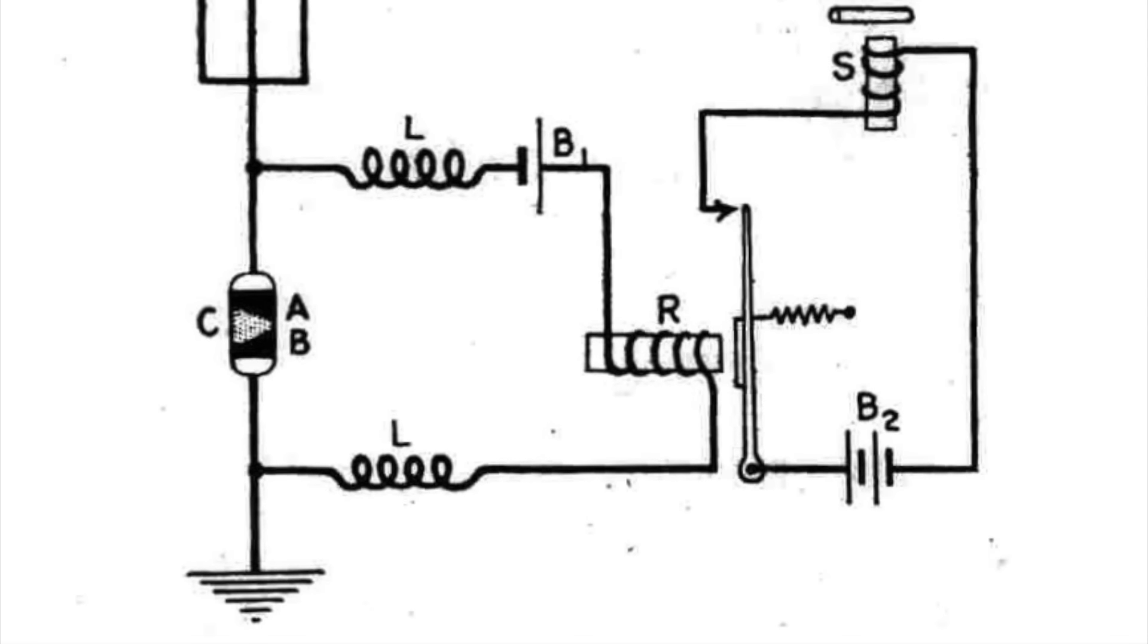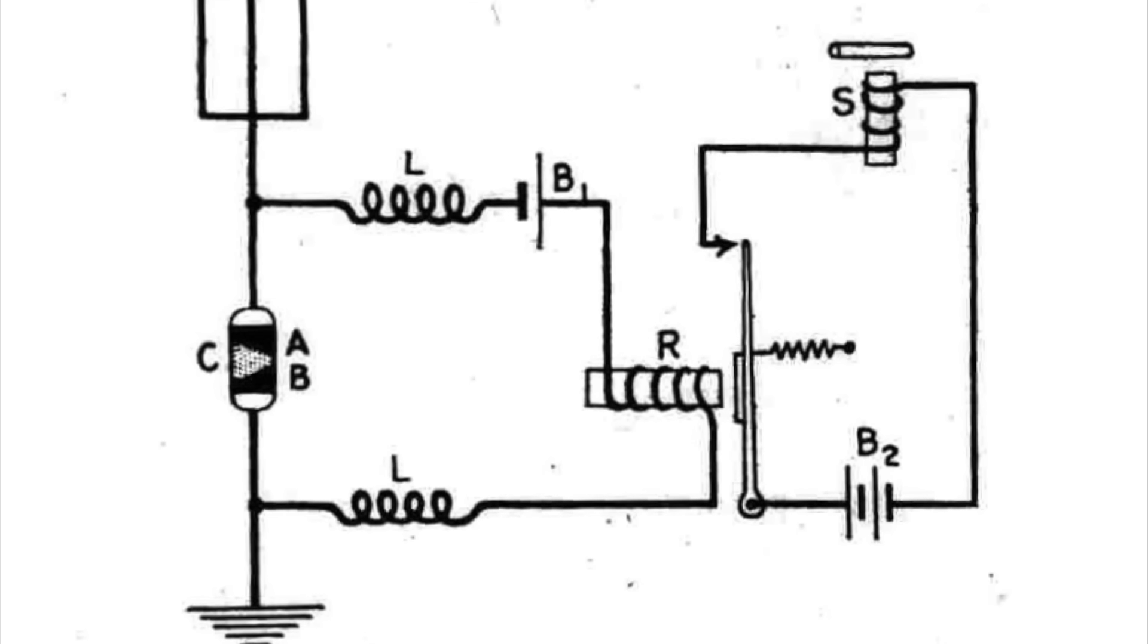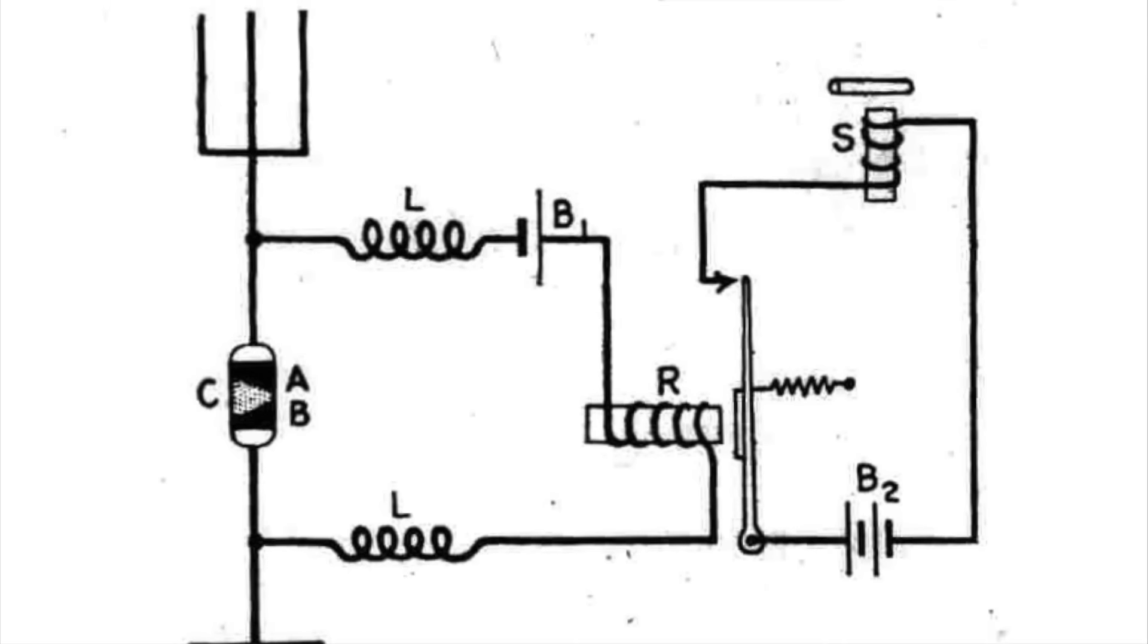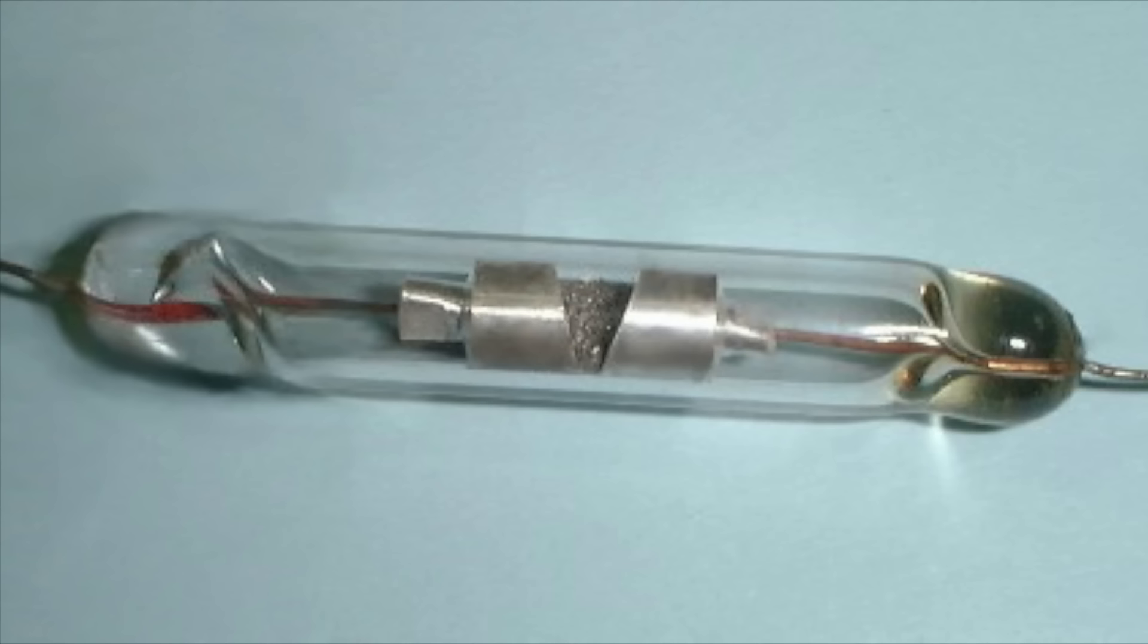Now the very first receivers for spark gap transmitters were based on a device called the Coherer, invented in 1890 by French physicist Edouard Braly. This consisted of a glass tube filled with fine iron filings with an electrode at either end, and a bias voltage was applied across the Coherer and connected to a set of headphones. When a burst of radio waves traveled through the Coherer, it caused the iron filings to clump together or cohere, reducing their resistance and allowing a current to pass through the Coherer to the headphones where they would appear as an audible click. Unfortunately, however, the iron filings would not automatically reset, meaning that this effect, on its own, was only good for receiving one signal.